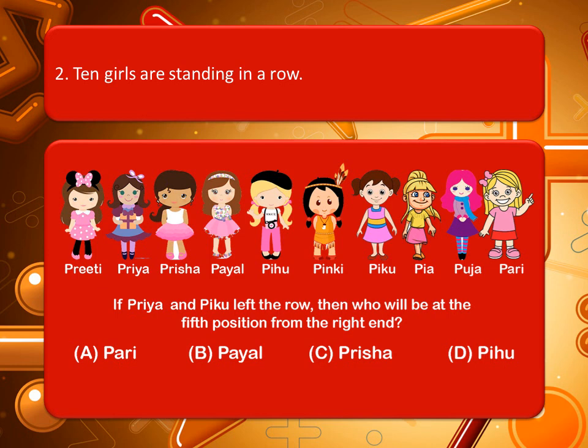The next question: 10 girls are standing in a row. If Priya and Piku left the row, then who will be at the fifth position from the right end? Look at the picture very carefully. You can pause the video to think about the correct answer. The correct answer is Pihu.